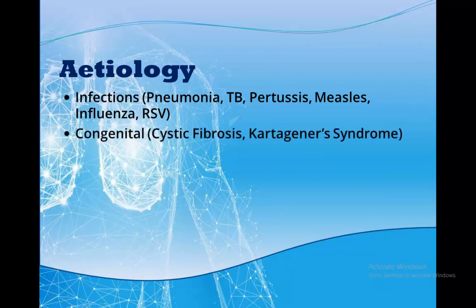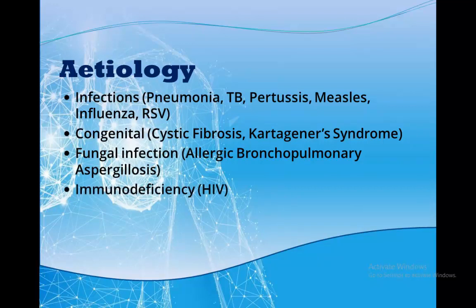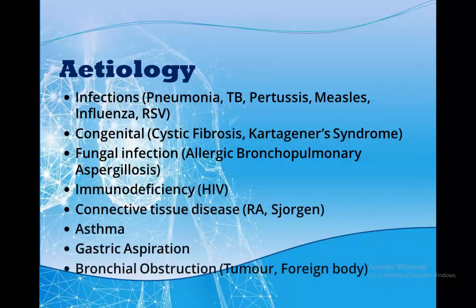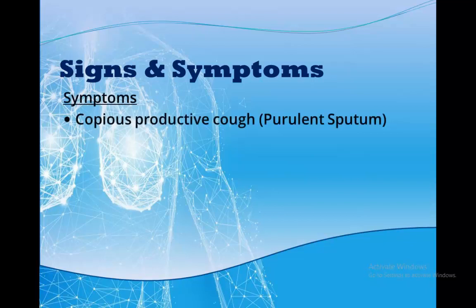Congenital diseases like cystic fibrosis, where there is thick mucus build-up making mucociliary clearance difficult, allowing microbes to form a colony and trigger an inflammatory response. In Kartagener's syndrome — also called primary ciliary dyskinesia — a similar process occurs. Other causes include allergic bronchopulmonary aspergillosis, immunodeficiencies like HIV which lead to more serious recurrent infections, connective tissue diseases like rheumatoid arthritis and Sjögren's syndrome, asthma, gastric aspiration, and bronchial obstruction.